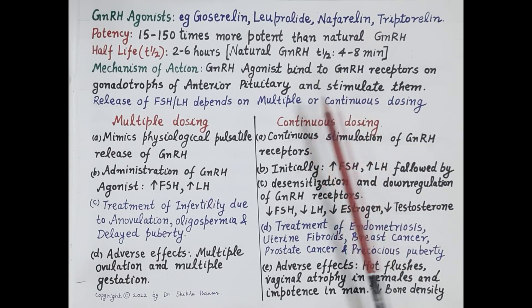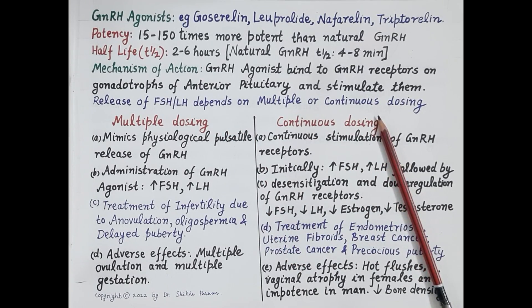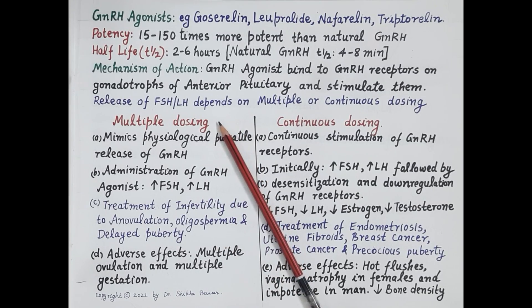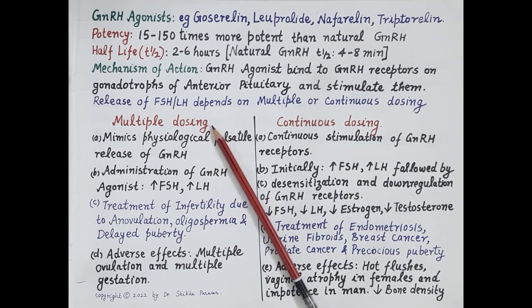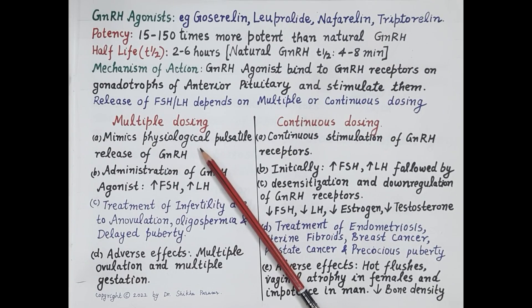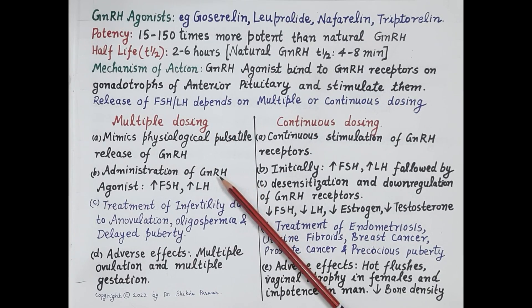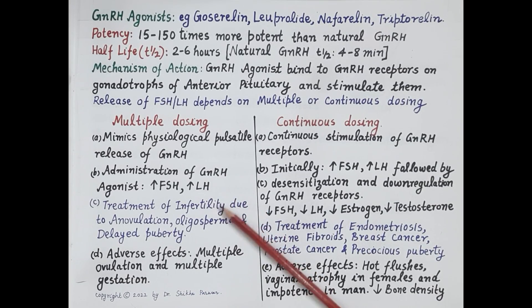GnRH agonists can be administered intermittently in multiple doses or continuously. In the multiple dosing method, since natural physiological GnRH is released in a pulsatile fashion, multiple dosing of GnRH agonists mimics this physiological pulsatile release. GnRH agonists are given multiple times, and each time they are administered FSH and LH are secreted. Therefore, multiple dosing causes increased release of FSH and LH, and this approach is used in the treatment of infertility.